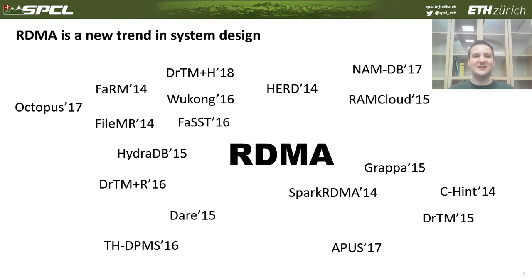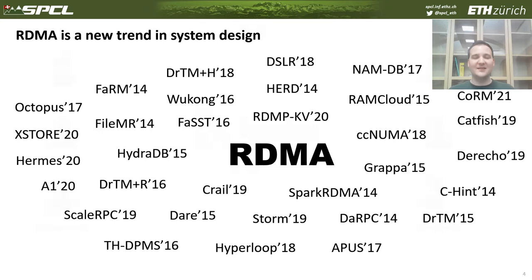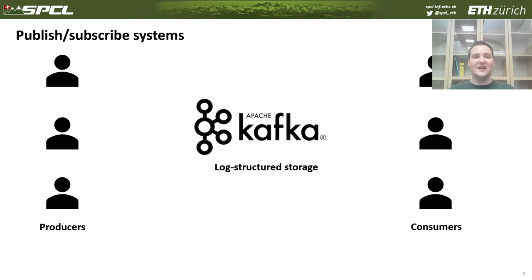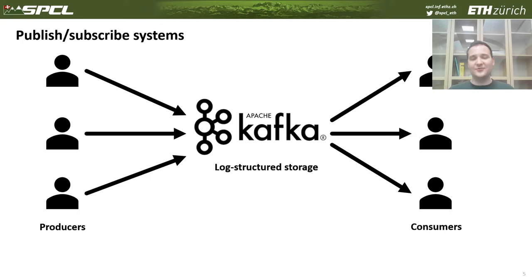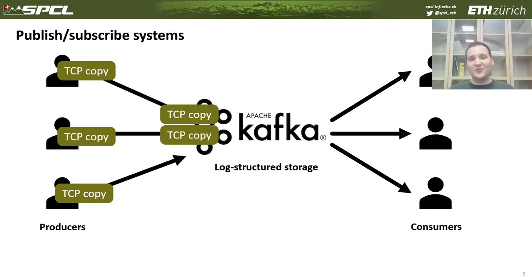As a result, we have hundreds of systems that took advantage of RDMA networking, and we think it's time to use RDMA for Apache Kafka. Apache Kafka is a publish-subscribe system that offers producers the ability to store records in queues. Consumers can subscribe to these queues and fetch records later. The problem with Apache Kafka is that all communication happens through TCP, which involves a lot of data copies in the network driver.